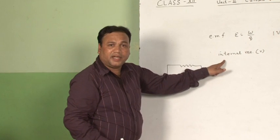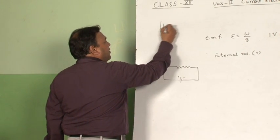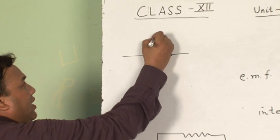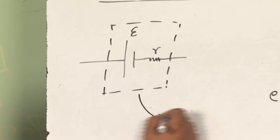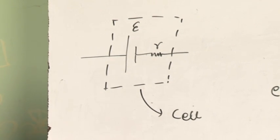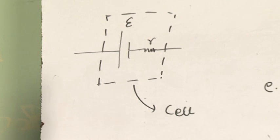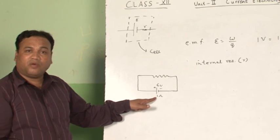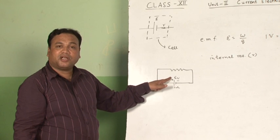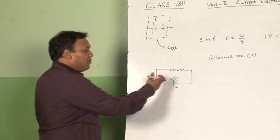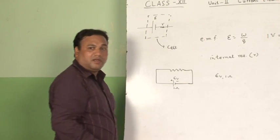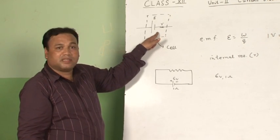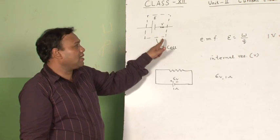The symbol for a cell along with the internal resistance is usually written as a cell and one small resistance. This combination or representation is usually called a cell. So if I write 6 volt and 1 ohm, it means this cell has an internal resistance of 1 ohm and it provides a potential difference of 6 volt. You can also write it as 6 volt, 1 ohm. This is the circuit symbol of a cell.